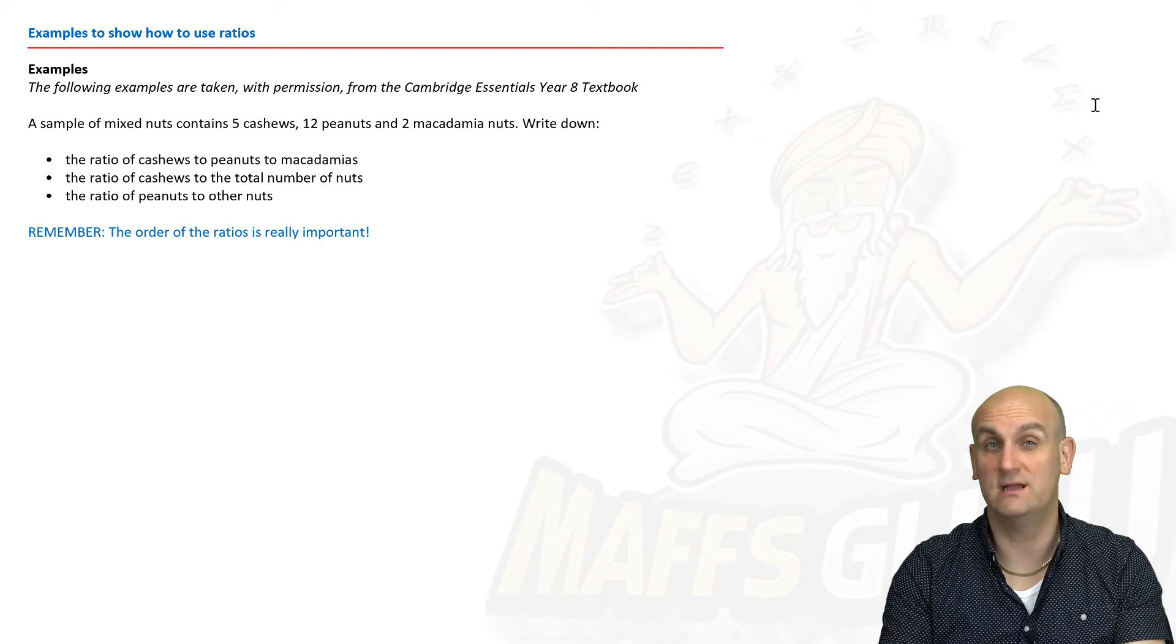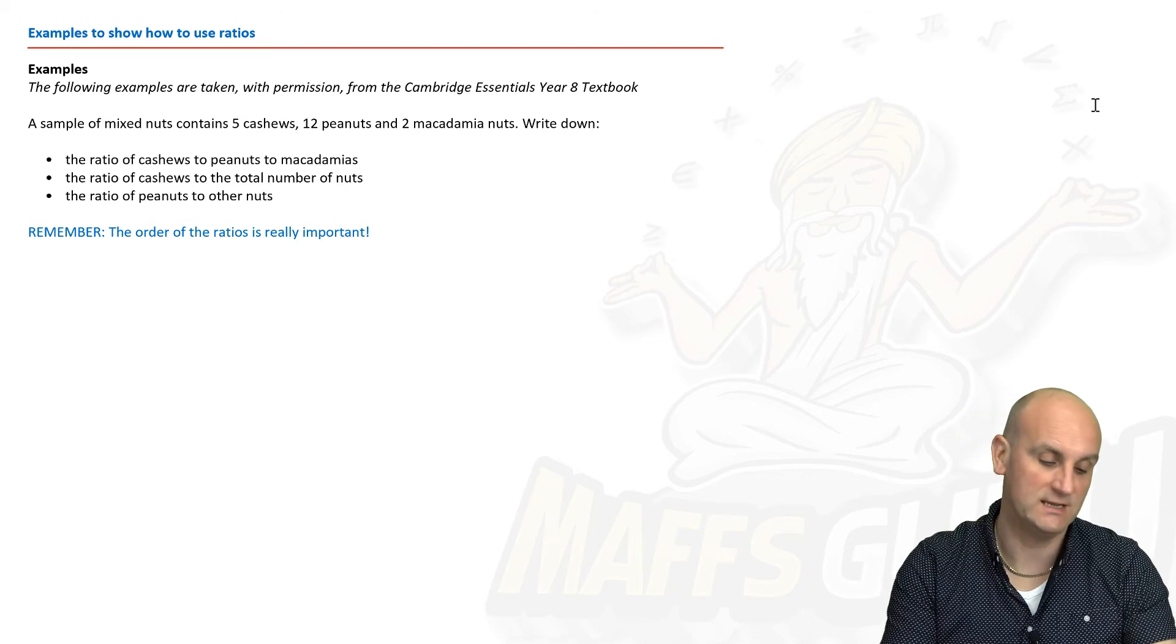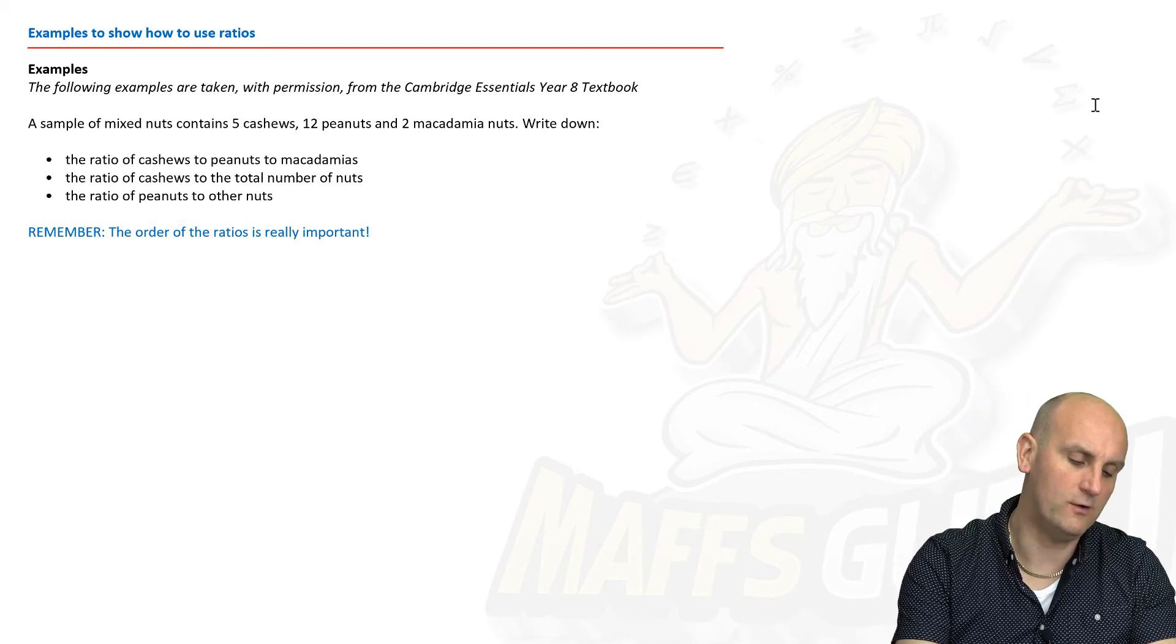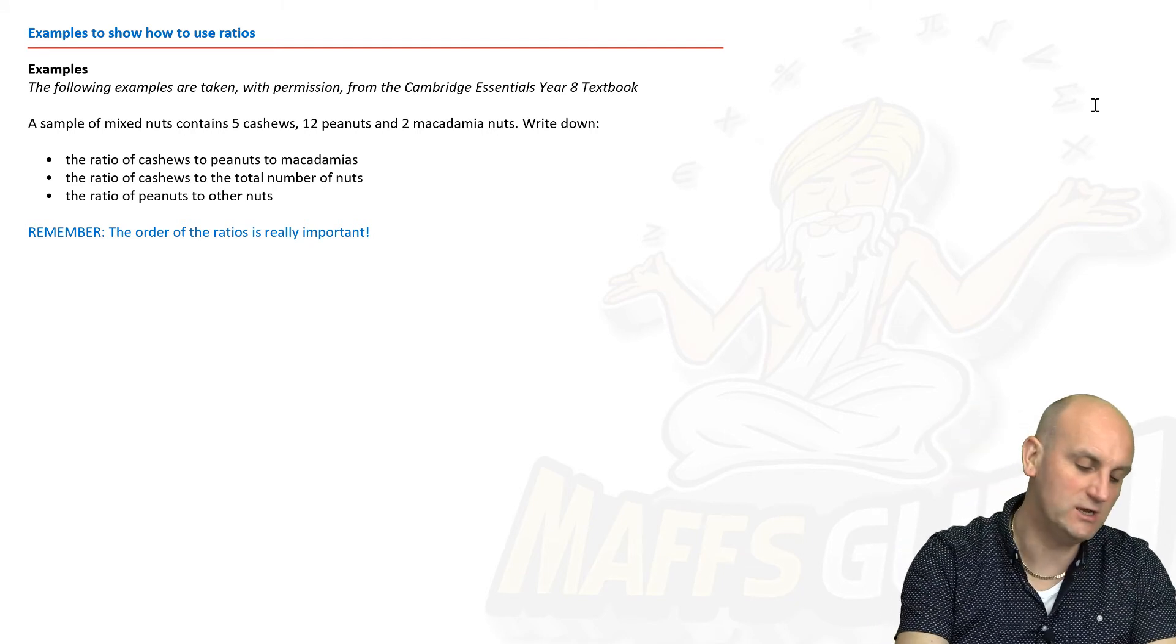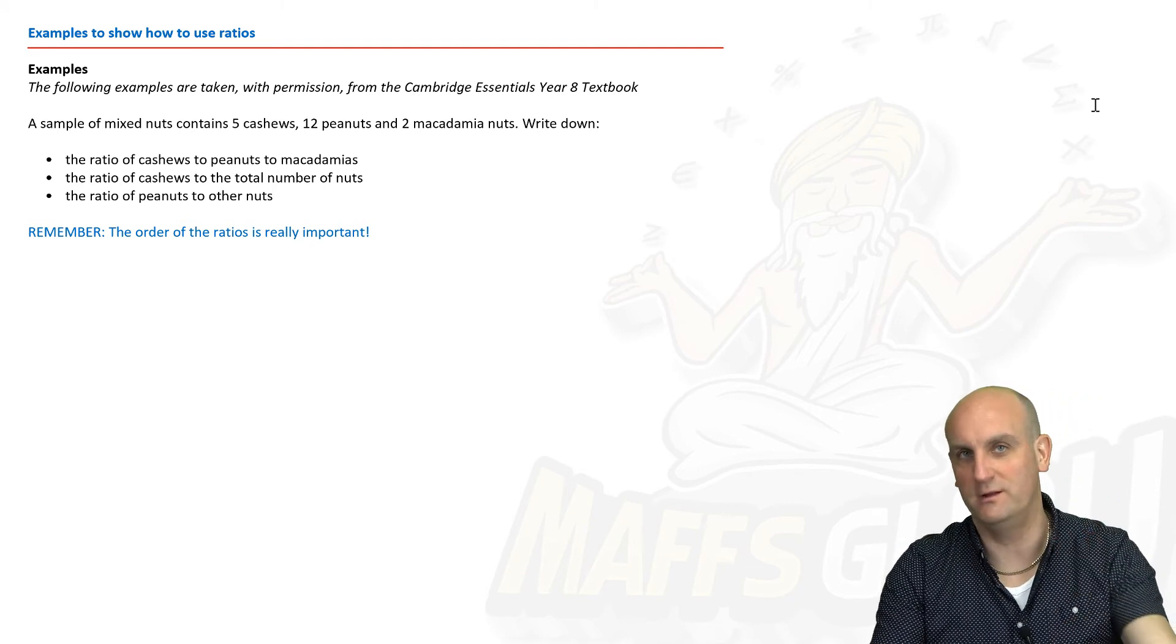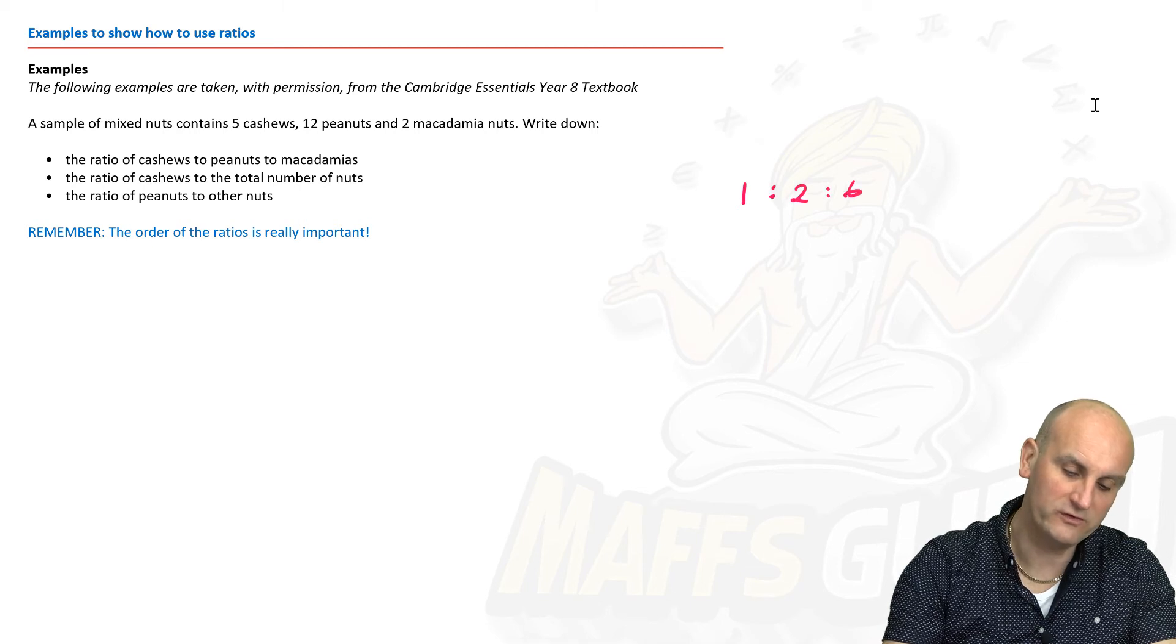Examples to show how we use ratios. The following examples are taken from the Cambridge Essentials Year 8 textbook. Thank you very much to Cambridge for letting me use your examples. You guys rock, you have some phenomenally awesome textbooks. Okay, our first example. And they're going to make it even more complicated now. Ratios don't have to be just two numbers.